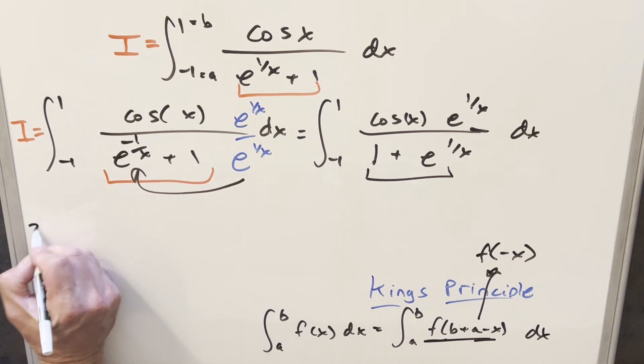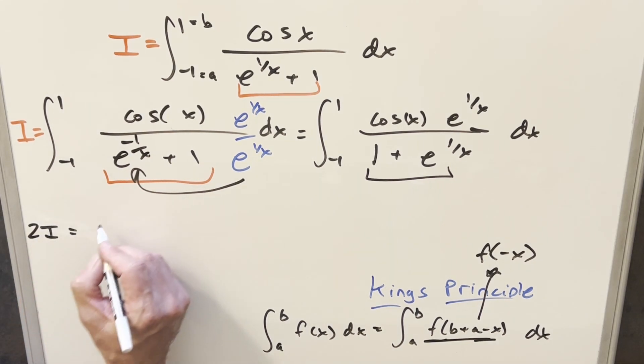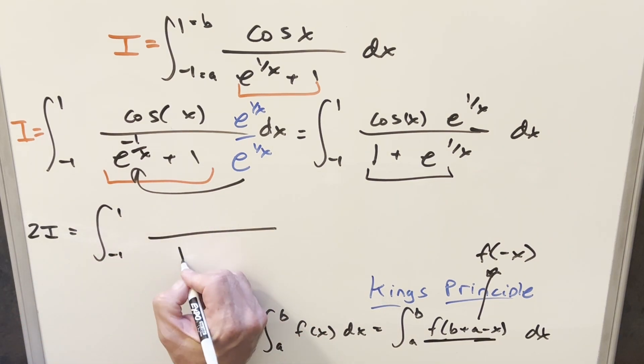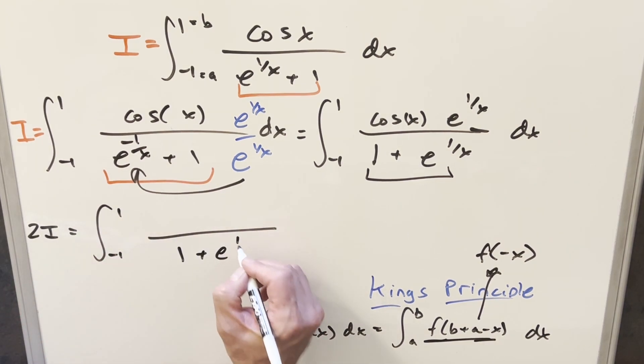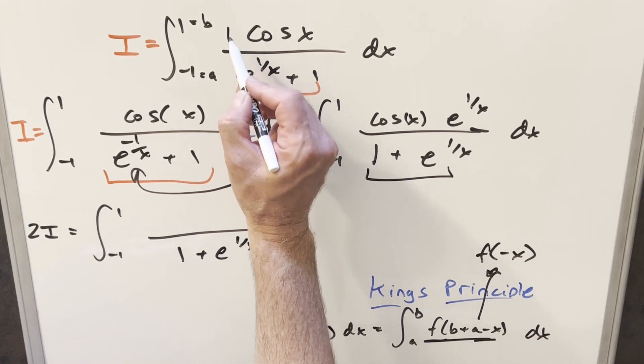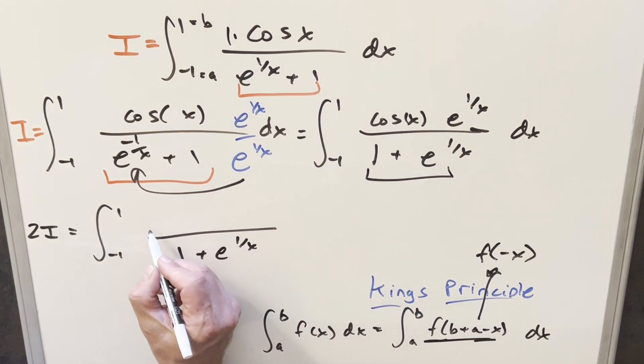So doing this, what's going to happen is now we're going to have two copies of the integral, 2I, and same denominator. I'm going to put them together all in one integral, common denominator 1 plus e to 1 over x. And then adding together the numerators, what I can do is factor out a cosine x.